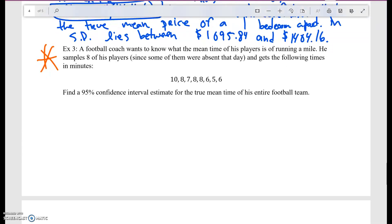A football coach wants to know what the mean time of his players is of running a mile. He samples eight of his players, since some of them were absent that day, and gets the following times in minutes. So these are all the times that each player had of running a mile. Find a 95% confidence interval estimate for the true mean time of his entire football team.